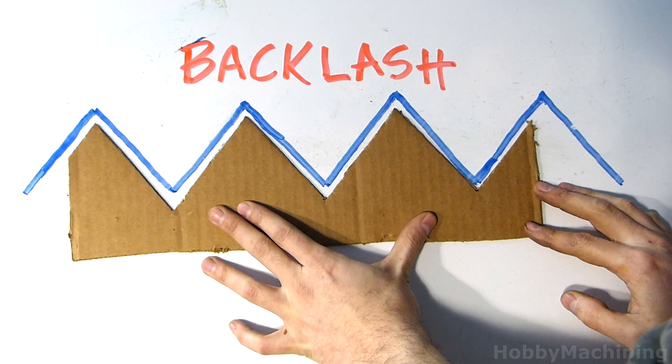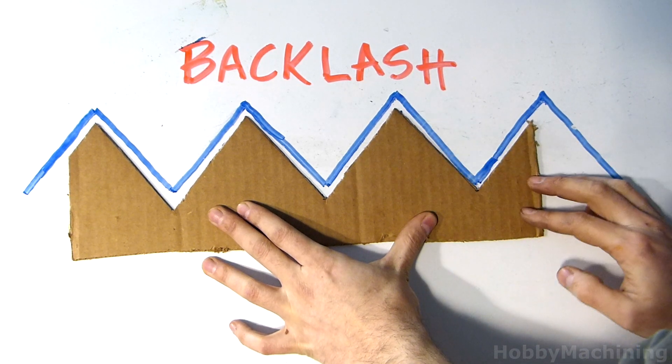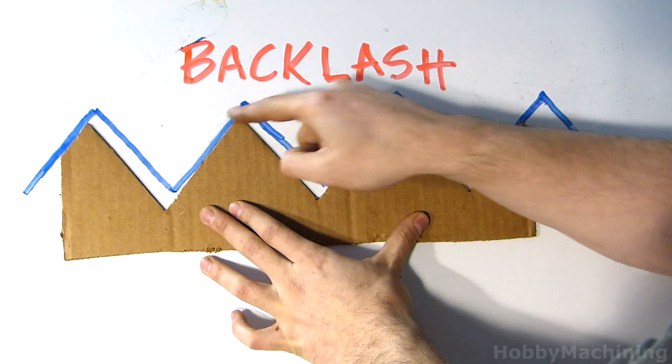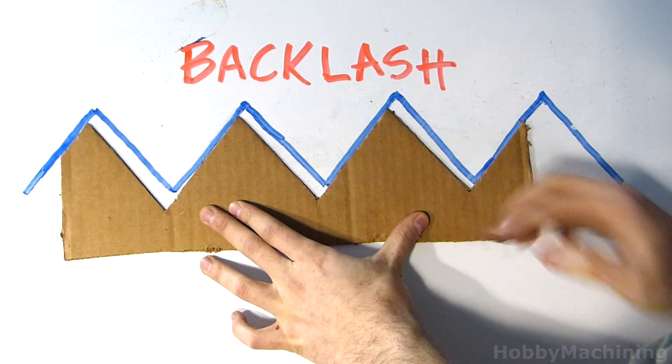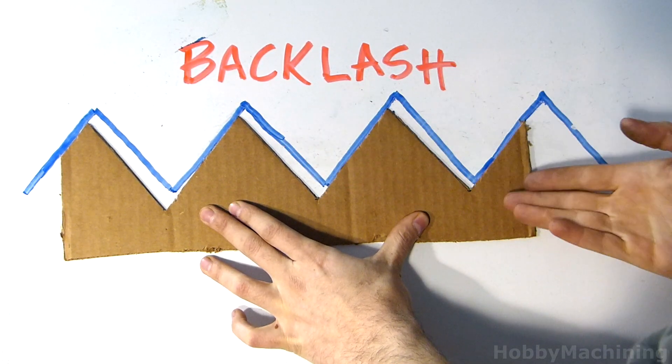When we start feeding this direction, we're going to encounter backlash where there is movement of this part but not of our part up top. Now we've made contact. If we continue feeding this direction, we will have smooth movement. We've taken up the backlash.